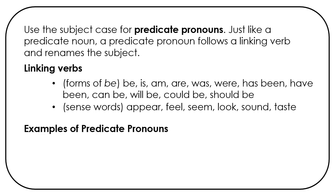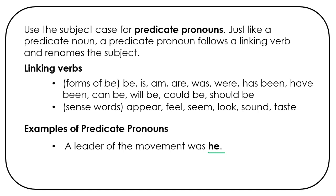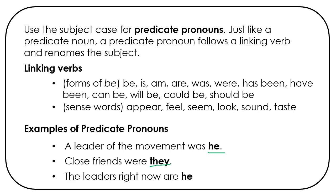Here are some examples of predicate pronouns. A leader of the movement was he. He is the predicate pronoun. A lot of people will say him, but the correct word is he. You can turn the sentence around and say he was a leader of the movement. Close friends were they. They were close friends. The leaders right now are he and I. He and I are the leaders right now.